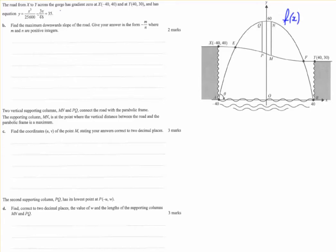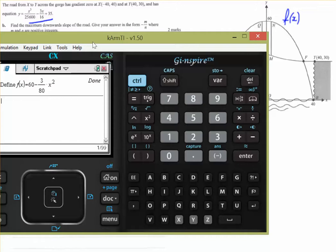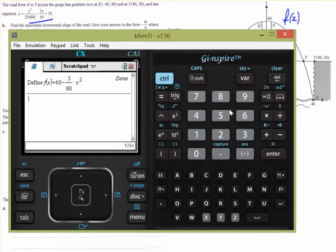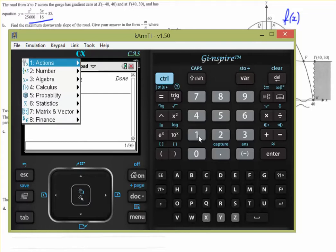So we're given a new function here in terms of y, and that's describing this road here for the bridge. So as soon as you see a new function, it's a good idea to define it on your CAS calculator. So we have the previously defined f of x, let's define y of x.